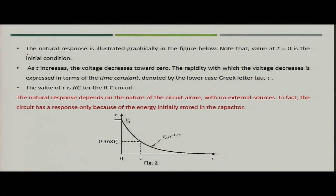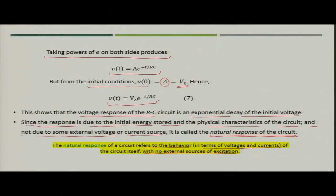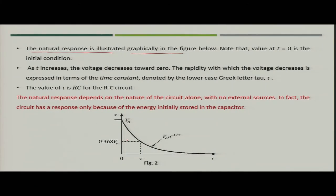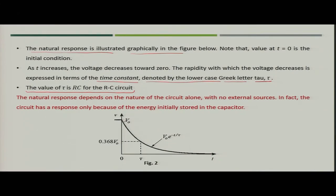When represented graphically, the natural response V(t) = V₀·e^(−t/RC) appears as an exponential decay. We introduce an important component called the time constant, denoted by the Greek letter tau (τ), where τ = RC. Substituting, the voltage becomes V(t) = V₀·e^(−t/τ), which decays exponentially from V₀ toward zero.